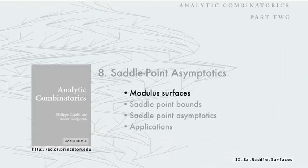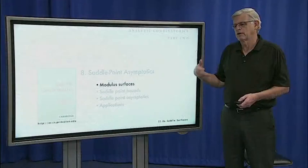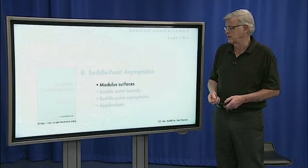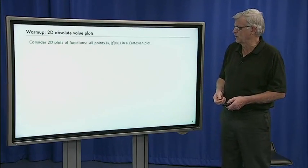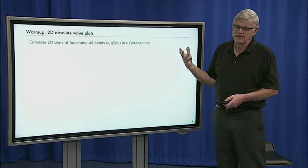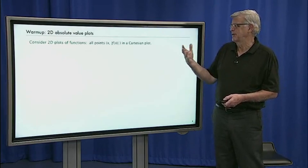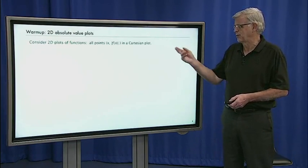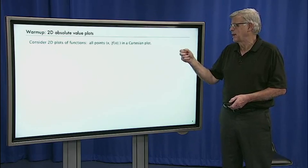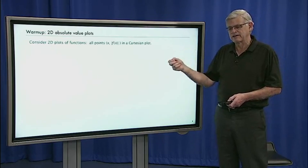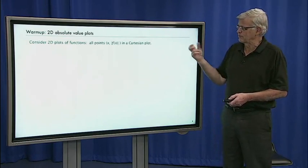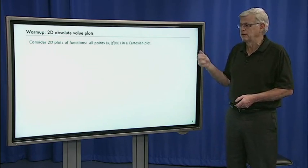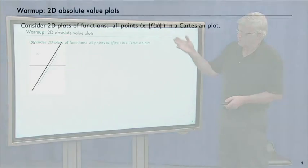To understand saddle point, we need to talk about modulus surfaces. This is a three-dimensional extension of what we've been using in two dimensions. To warm up, I want to look at two-dimensional plots of functions where we plot x versus the absolute value of some function of x in a Cartesian plot.